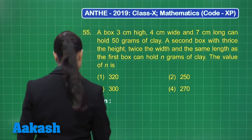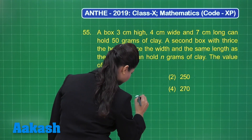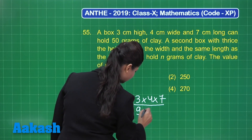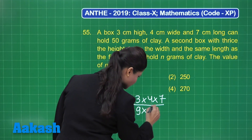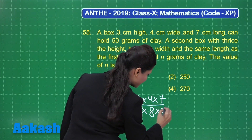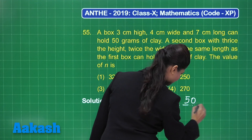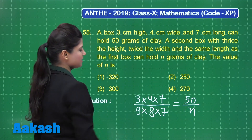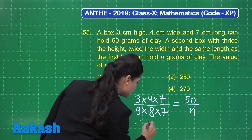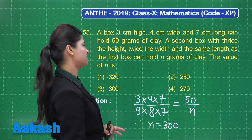Let's compare their capacities. The volume of the first box is 3 × 4 × 7, and the volume of the second box is 9 × 8 × 7, since it has thrice the height, twice the width, and the same length. Taking the ratio of volumes equal to the ratio of capacities gives 50/n. The 7s cancel, reducing to 1/6 = 50/n, so n equals 300.